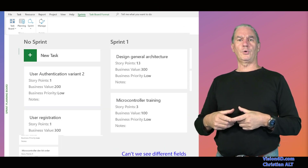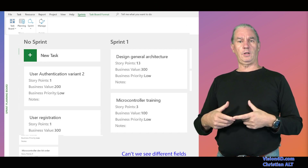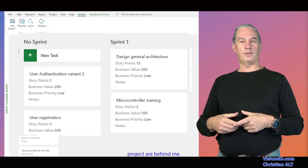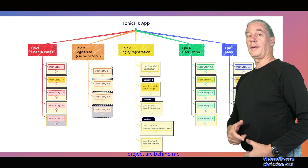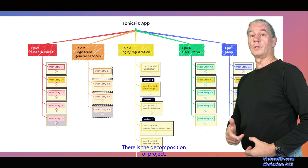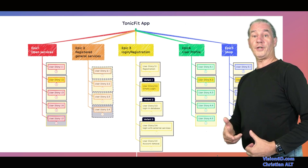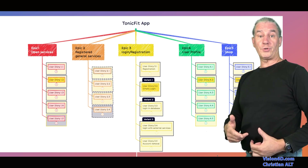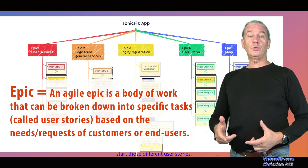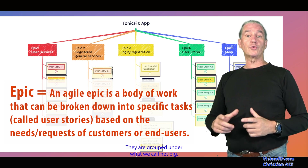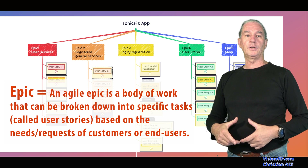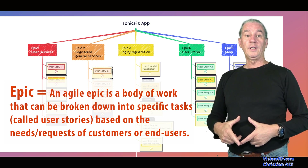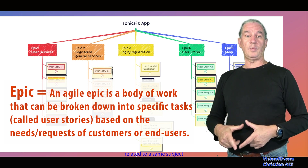In each of those cards, we see different fields that I have added into this MS Project. Behind me there is the decomposition of a project — we have many user stories. Those different user stories are grouped under what we call an epic. An epic contains a lot of user stories relative to the same subject.